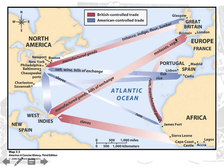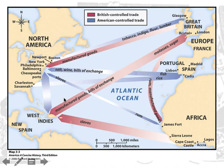For the most part, manufactured goods were created and shipped out of Britain to places like West Africa, the Caribbean, and North America. There were slaves shipped from Africa predominantly to the West Indies, but some went to British North America — predominantly the colonies in the South. Raw materials were then shipped from North America and the West Indies back to Great Britain.